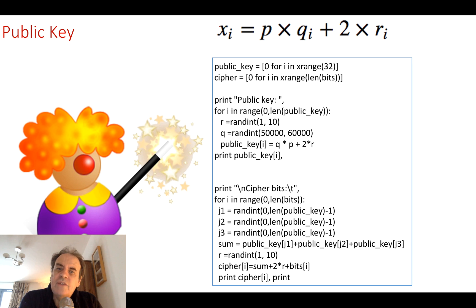So the public key becomes P times Q times 2R, and this adds noise onto the key. So it's very difficult to actually determine the value of P, which actually created the public key. So we can then print out the public key.